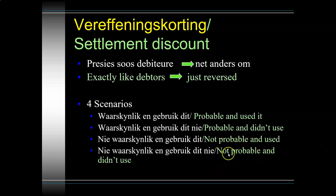Scenario four: it was not expected that we would make use of the settlement discount - a normal purchase transaction. Debit either purchases or inventory depending on the inventory system, debit VAT input, credit creditors control with the invoice value. At payment, did we pay within the settlement discount period? No. So we must have paid the full invoice value. I debit creditors control with the amount paid, credit bank with the amount paid, and there are no further repercussions.